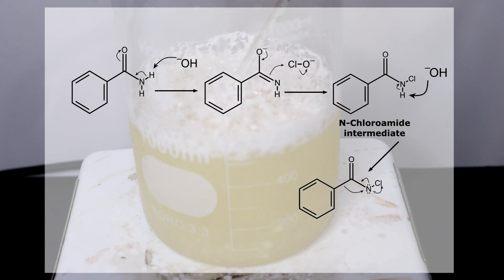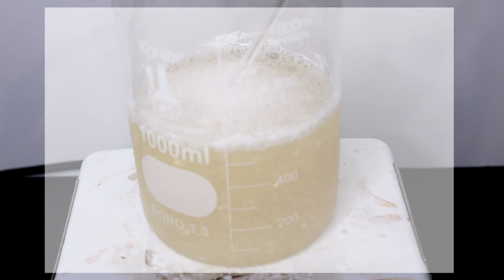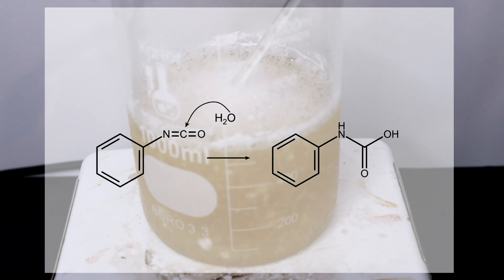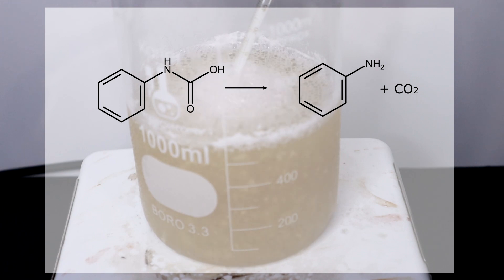This anion then rearranges as the phenyl group migrates to the nitrogen atom with the simultaneous loss of chlorine and the formation of an additional nitrogen carbon bond. This forms the phenyl isocyanate intermediate. In the presence of water isocyanates react by a nucleophilic addition step of water to yield a carbamic acid which then spontaneously loses CO2 and ultimately yields our aniline amine product.